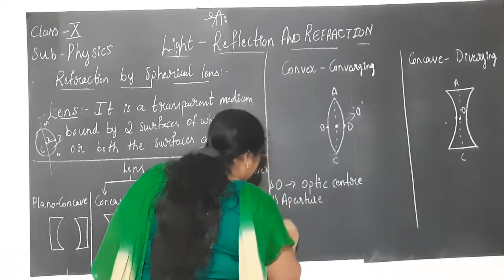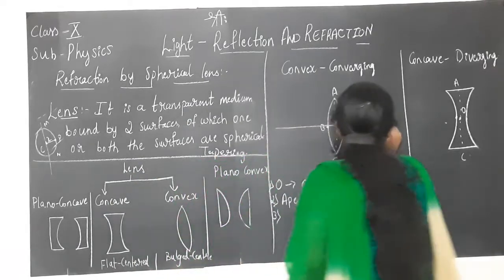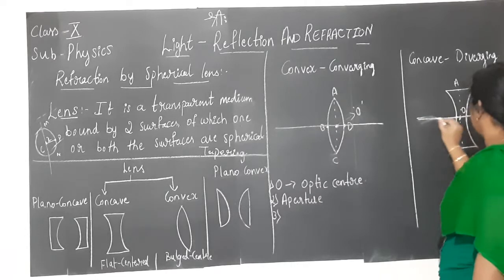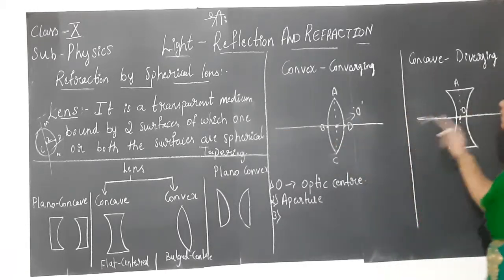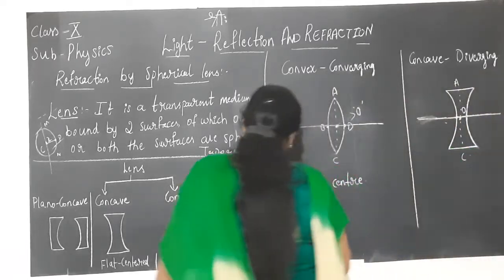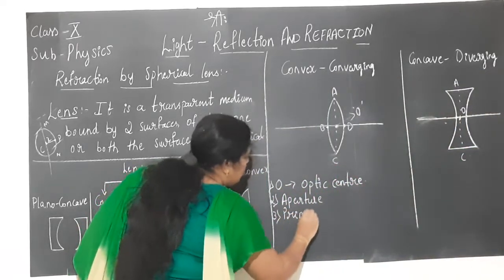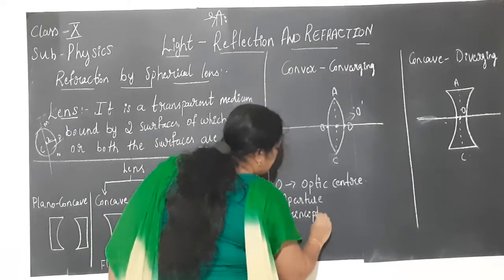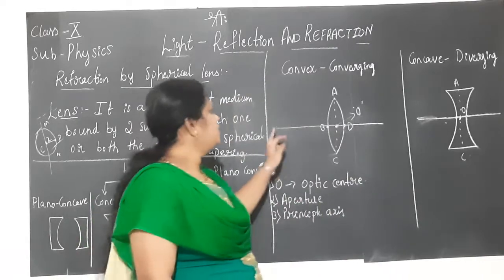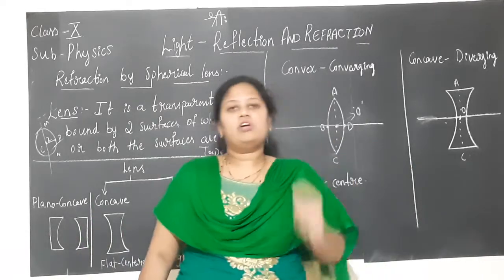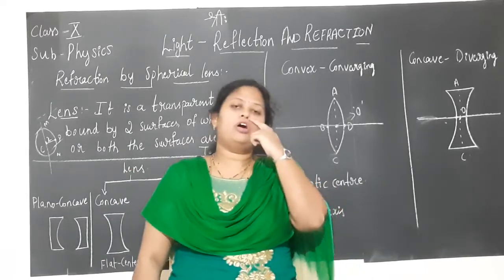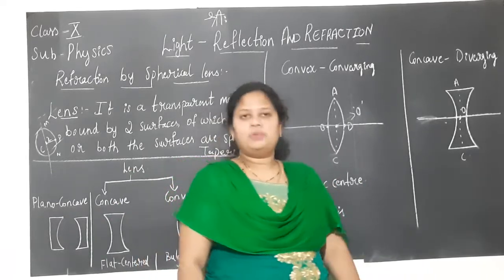The third concept is the principal axis — the line which is passing through the optic centre is called the principal axis. In case of a mirror, the straight line passing through the pole is the principal axis. In case of a lens, the line passing through the optic centre of the lens is called the principal axis.